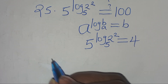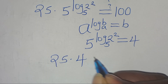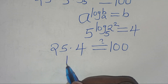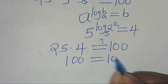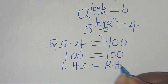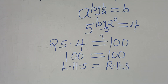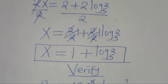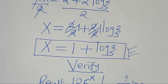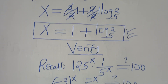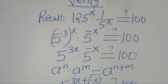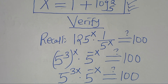Substituting: 25 times 4 equals 100, which is indeed equal to 100. The left-hand side equals the right-hand side, proving that x equals 1 plus log₅2 satisfies the equation. Please like this video and subscribe — see you in the next video!